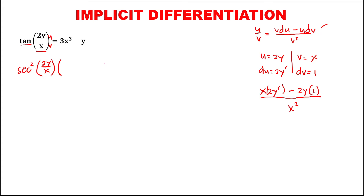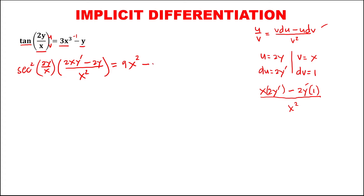So this is 2xy prime minus 2y, all over x squared. Then equals the derivative of 3x to the power 3, which is 9x squared, minus the derivative of y, that's y prime.